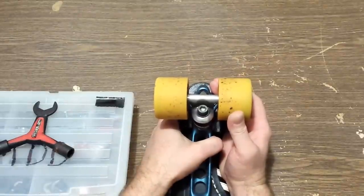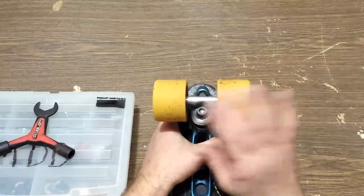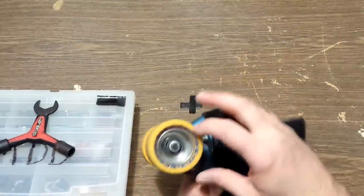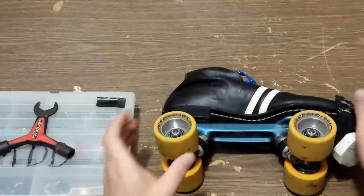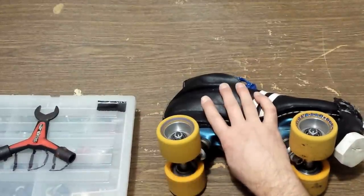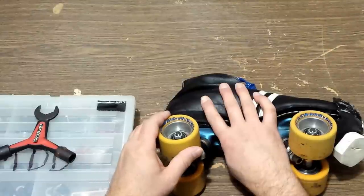You can see how slight that movement is. That's about what you want. That way your bearings aren't bound up by the nut pressing too hard. That's going to let your wheels move freely without binding up.